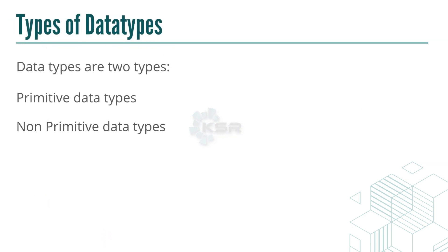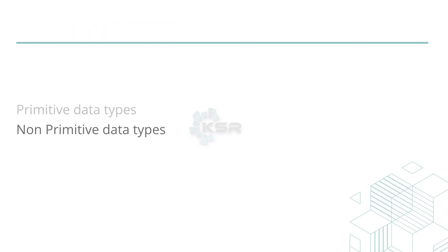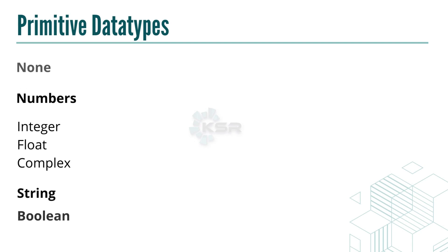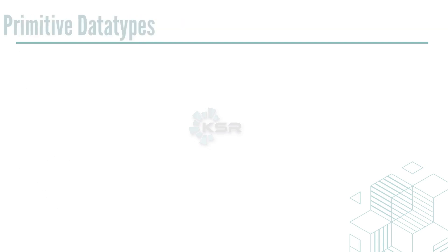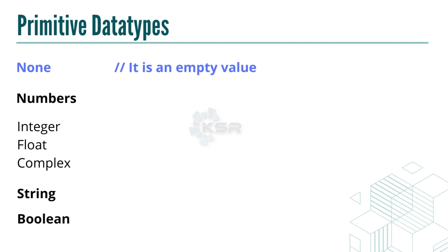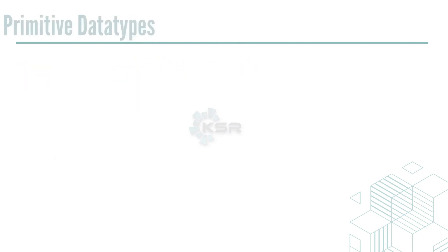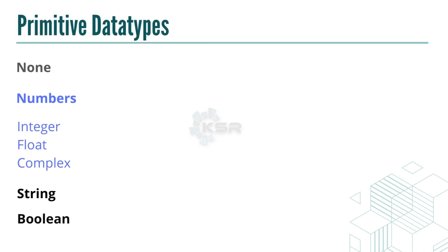There are two types of data types in Python: primitive and non-primitive. Primitive data types include None, Numbers, String, and Boolean. None represents a null or empty value. Under Numbers, we have three subtypes: integer, float, and complex.